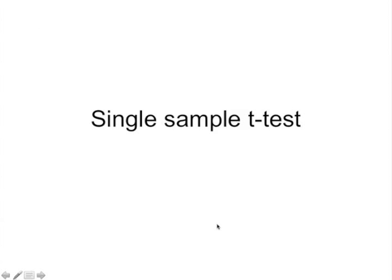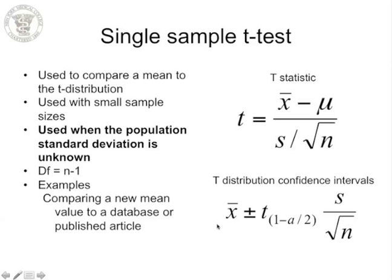The single sample T-test is used when comparing a particular group to a known mean using the T-distribution. It is used with small sample sizes and when the population standard deviation is unknown. Degrees of freedom are n minus 1. The formula is: T = (x-bar minus mu) divided by (s divided by square root of n), where x-bar is the sample mean, mu is the known mean, s is the standard deviation, and n is the sample size. The confidence interval formula is: x-bar ± t(1 - alpha/2) × (s / √n).